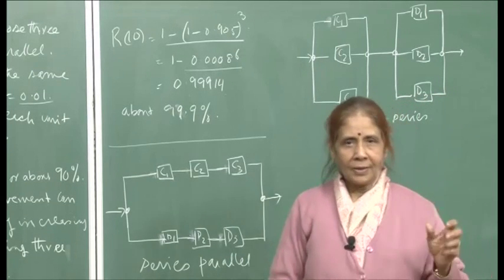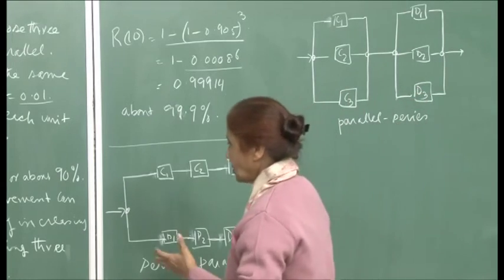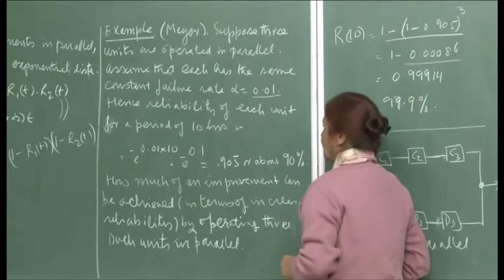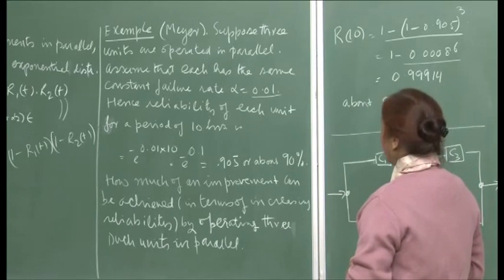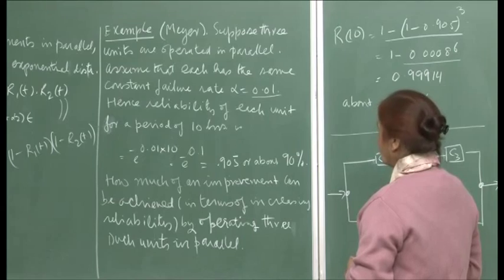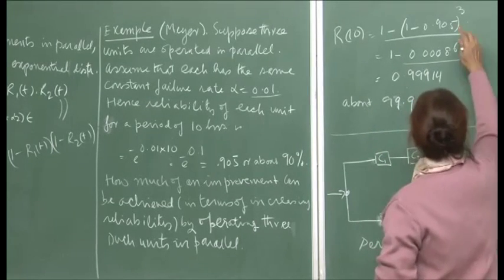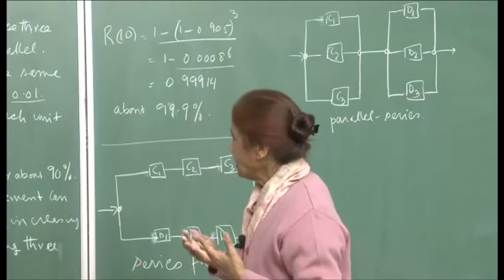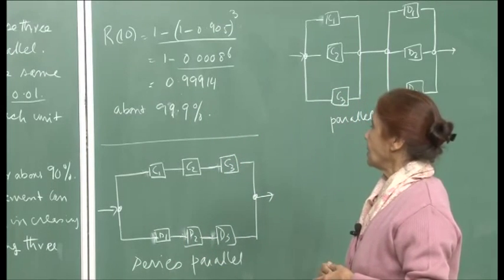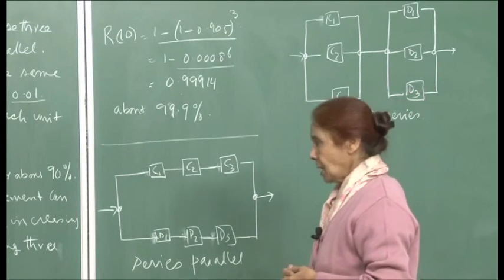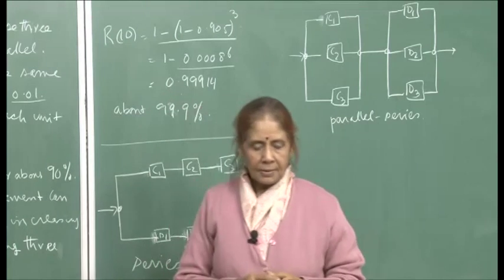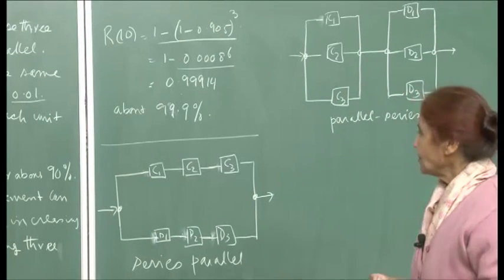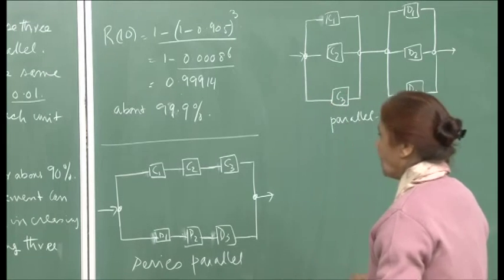The numbers drive home the point: reliability can be improved by having components in parallel. But it has to be weighed against reliability versus cost, and reliability versus the volume of the device. You cannot just go on having components in parallel indefinitely.